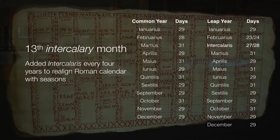However, there is a major problem with this. This calendar would quickly get out of date with the seasons, and so a separate month was added every four years to realign the Roman calendar with the seasons. This was called the month of Intercalaris. And not only that, but on those years, even the days of the other remaining months would be altered a little bit to help keep the seasons in line with the calendar.